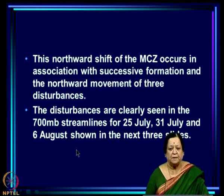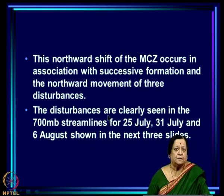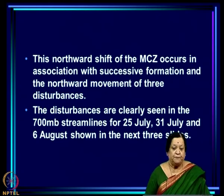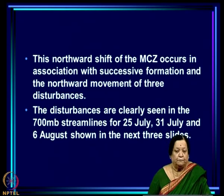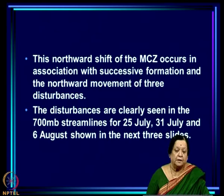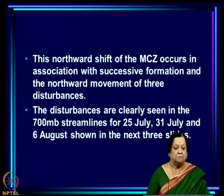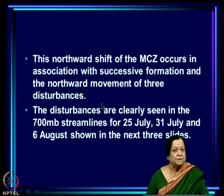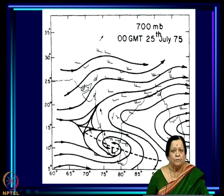This northward shift of the MCZ occurs in association with successive formation and northward movement of three disturbances. Although we think of a tropical convergence zone as a planetary-scale cloud band, embedded in this planetary-scale band are synoptic-scale disturbances, and often in the northward propagation you see them as propagation of synoptic-scale disturbances.